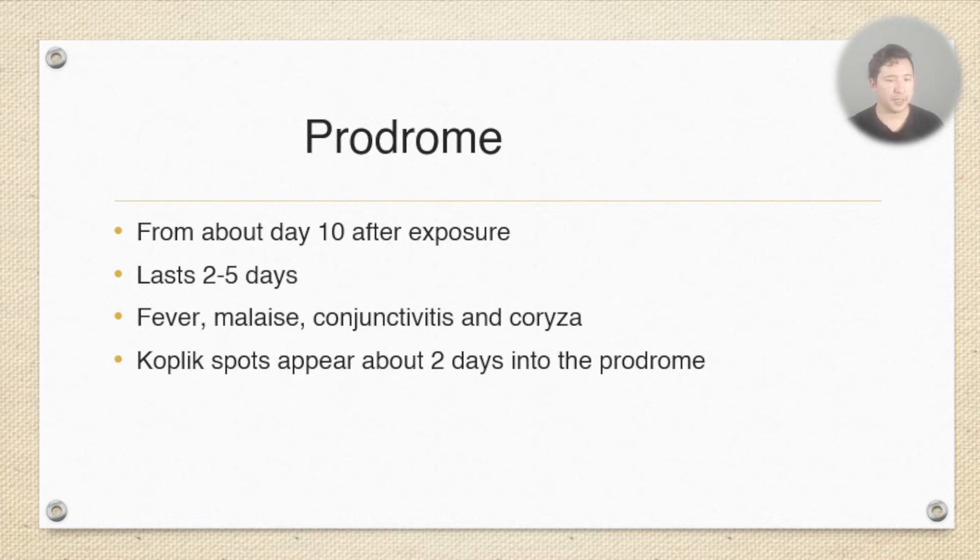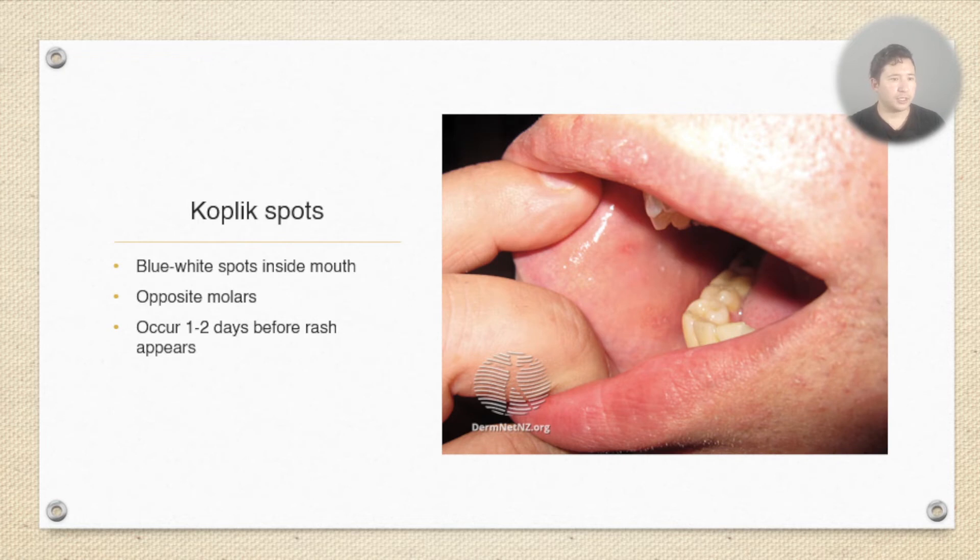The Koplik spots are these blue whitish spots that are usually opposite the first molars and they occur one or two days before the rash appears, so a couple of days into the prodrome. You can see here on the inside of this child's mouth you can see these little white spots just adjacent to the molars. So those are a key sign of measles and they really give you a clue that this person has measles.